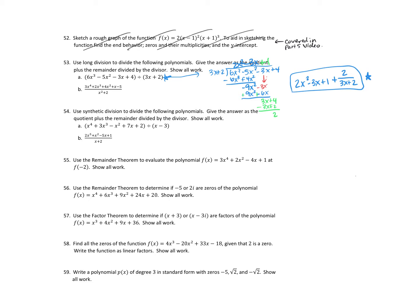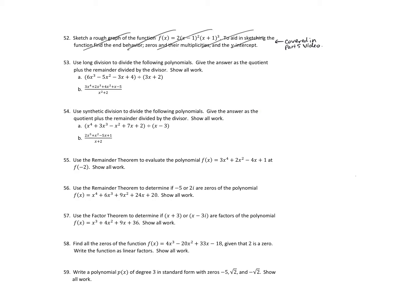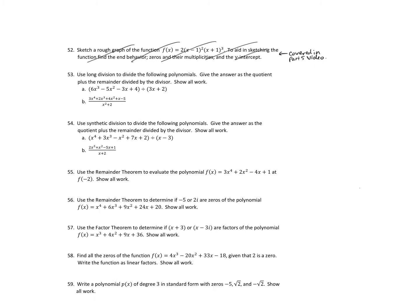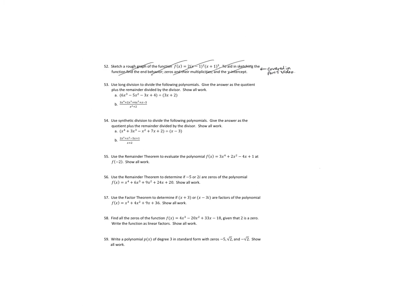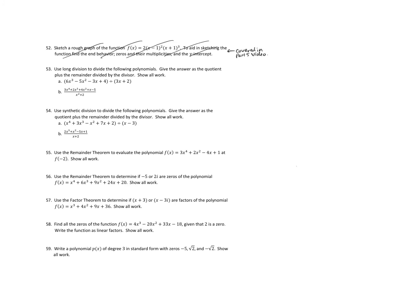So I'm going to erase that to do 53b, and I'll give myself a little more space this time. So we would do 3x to the 4th plus 2x cubed plus 4x squared plus x minus 5.